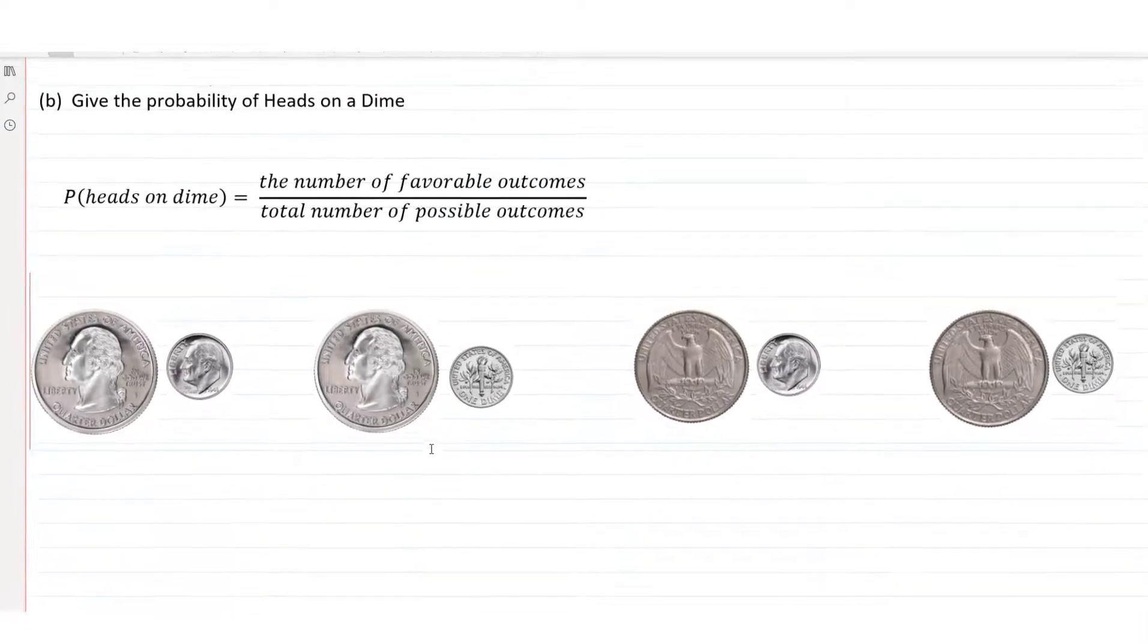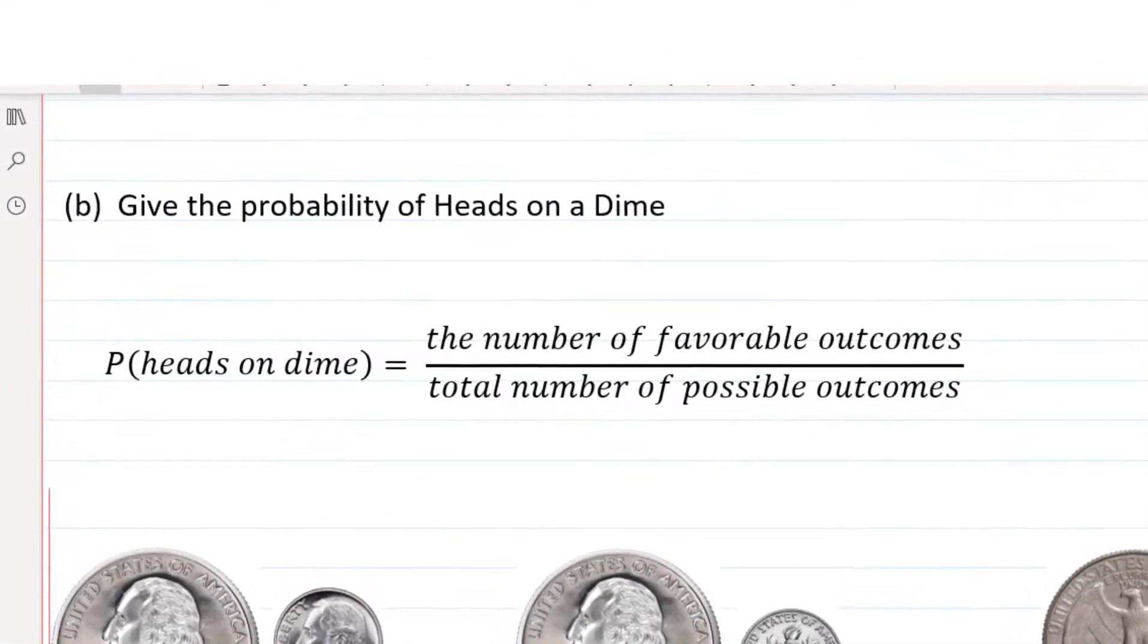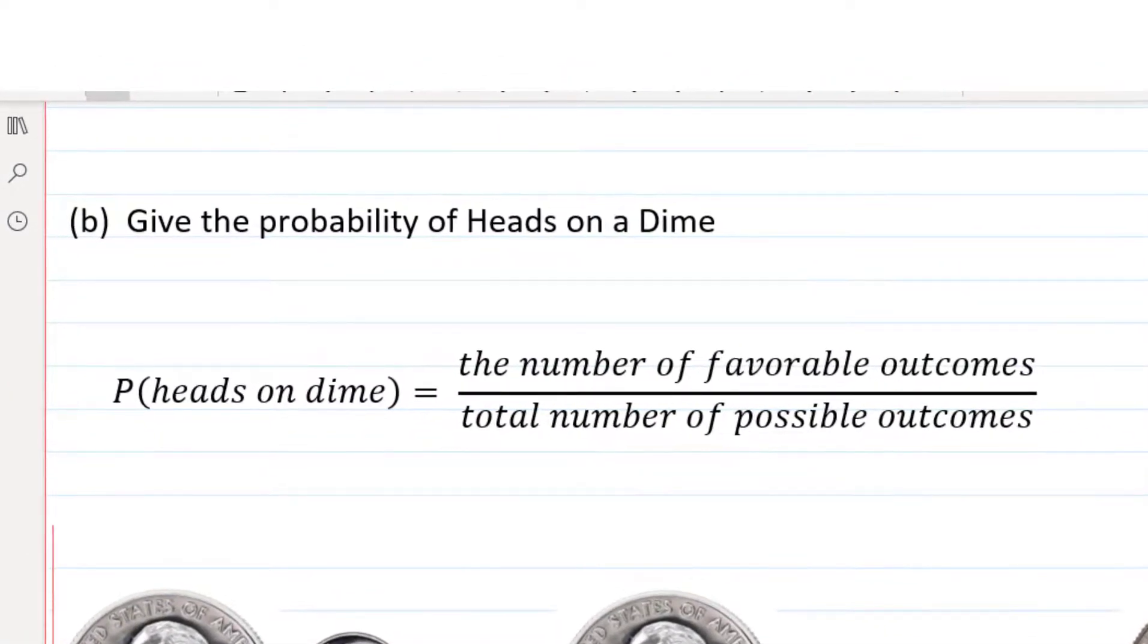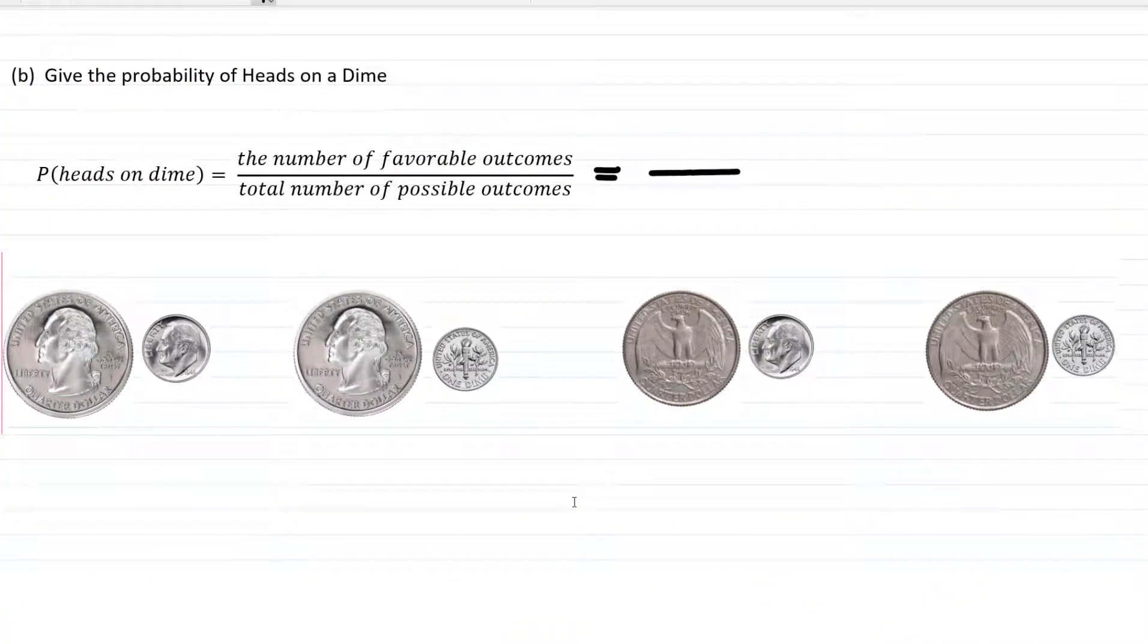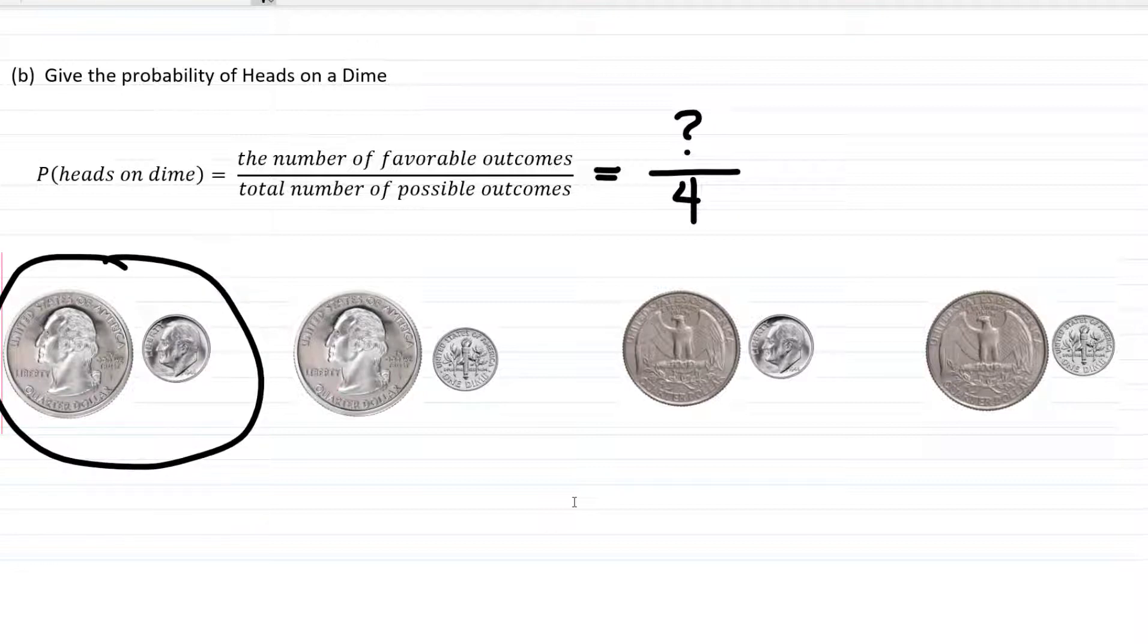For example, in part B, we're asked to give the probability of getting heads on a dime. Remember, probabilities are the number of favorable outcomes divided by the total number of possible outcomes. We already know the total number of possible outcomes is four. We just need to figure out how many of those outcomes are favorable to having heads on a dime. I'm going to use the diagram again and circle those outcomes that have heads on the dime. There are two ways that that can happen.